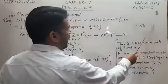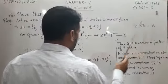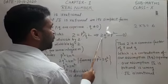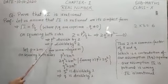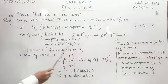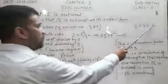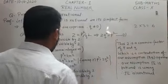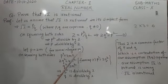Any number obtained by multiplication of an integer by 2 is divisible by 2. So here p square is obtained by multiplication of q square by 2, that is why p square is divisible by 2. And if a number is divisible by 2, you can write it as the product of an integer with 2, so here we can write p is equal to 2m for some integer m.